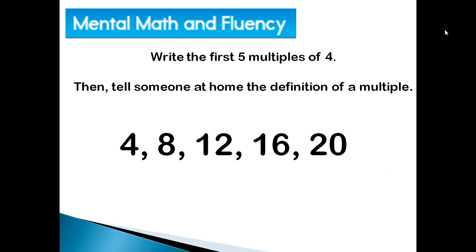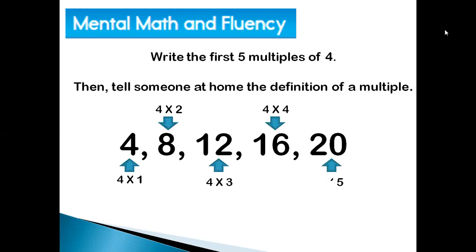If you are finding the multiples of four, it is just the product when you multiply by four. If we look at our first multiple, we get that by doing four times one, which gives you four. The second multiple comes from multiplying four times two, which is eight. The third multiple comes from multiplying four times three, which is twelve, and so on. So essentially, multiples are just skip counting by that number. We can find multiples of whole numbers, but we can also find multiples of fractions — we're going to be using that concept in today's lesson.